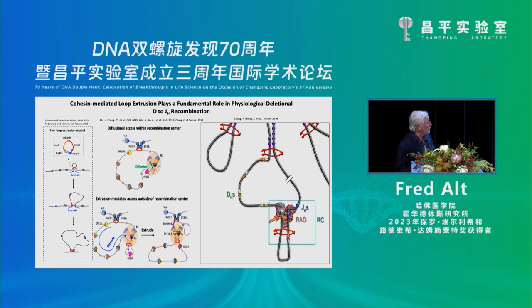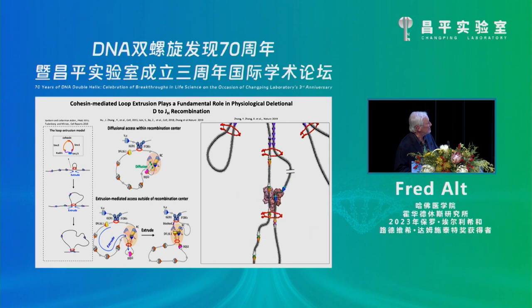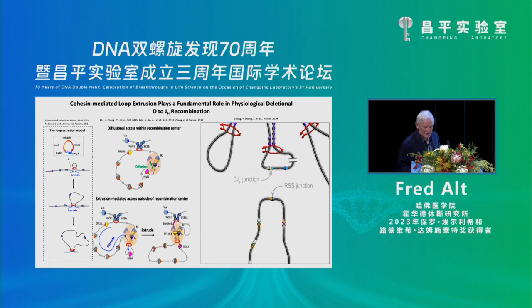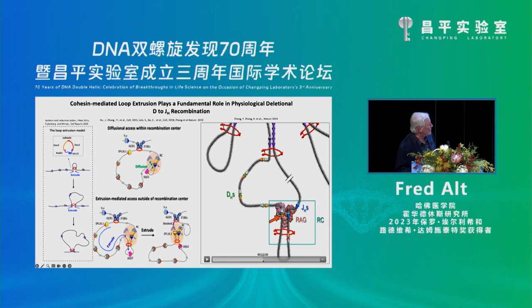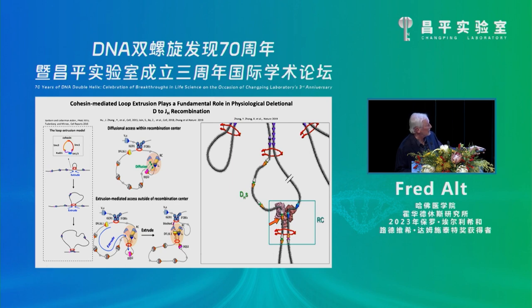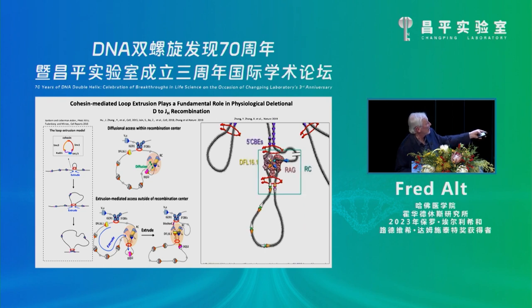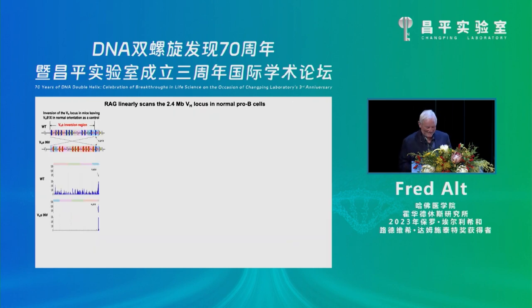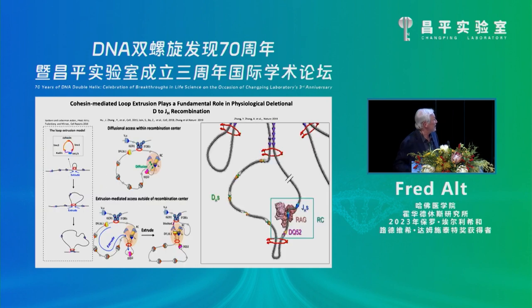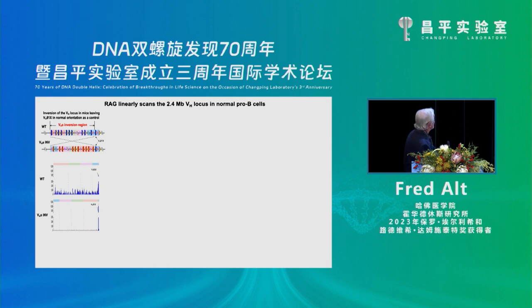Cohesin will hit the recombination center and be stopped on one side. The Ds get brought through, always in an orientation that allows them to be joined. As they go through in this orientation, the RSS is lined up perfectly. The RSSs on the other side of the Ds are not lined up, so extrusion continues. When it gets to the last anchor, that's the last thing joined, giving you a DJ complex. But then it hits a loop anchor and can't get through to the V segments — so the question becomes how does it find the hundreds of Vs over several megabases of chromatin.